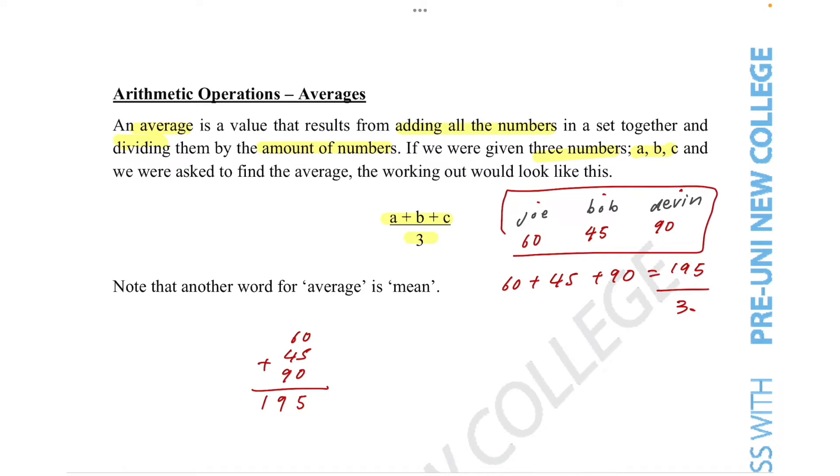So let's say 195 divided by 3. That'll be 3 divided by 19, which is 6 over, and then 18 under. And 19 minus 18 would be 1, and then put the 5 under. And we all know that 15 divided by 3 is 5. So the average between Joe, Bob, and Devin would be 65.